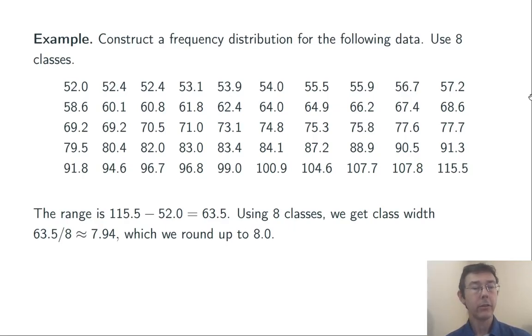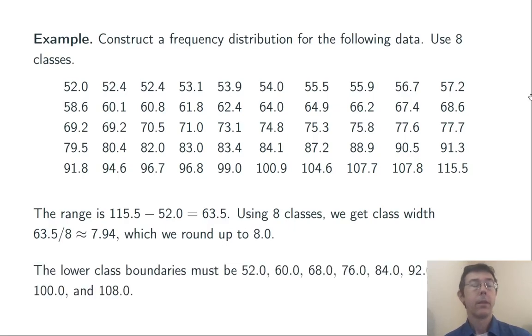I want eight classes, so I divide that number by eight, and I get 7.94. I round that up to get 8.0. The lower boundary of my first class is going to be 52, and then I start counting up by 8.0.